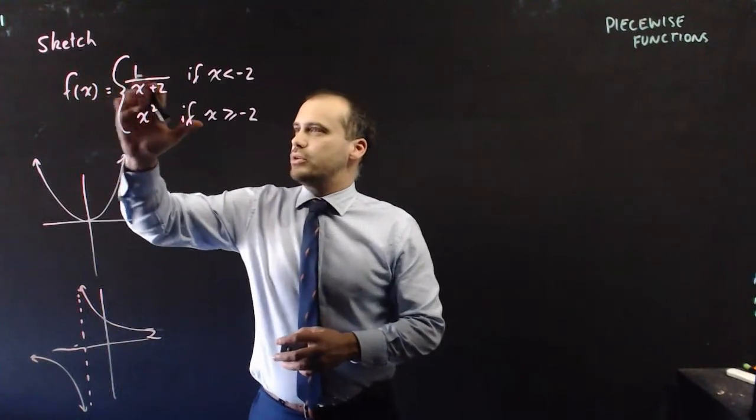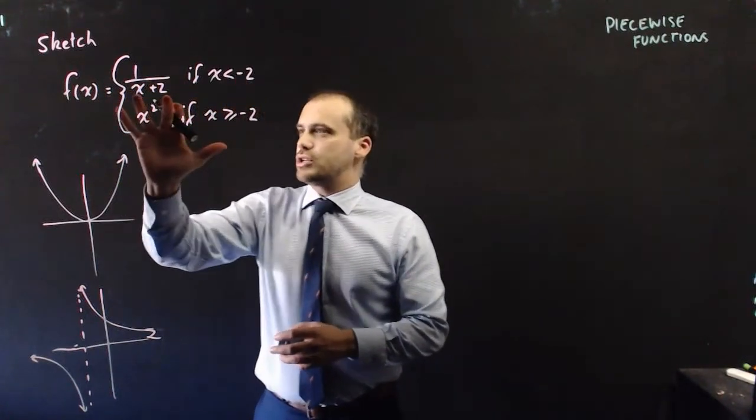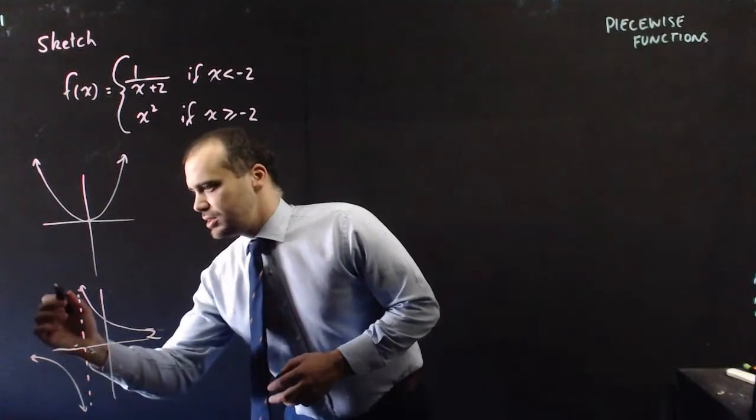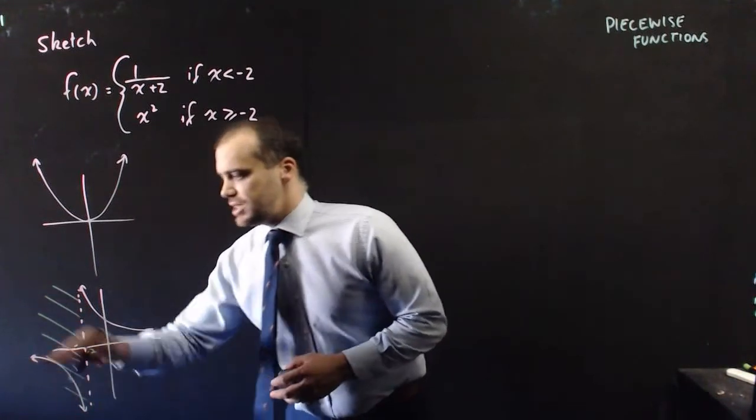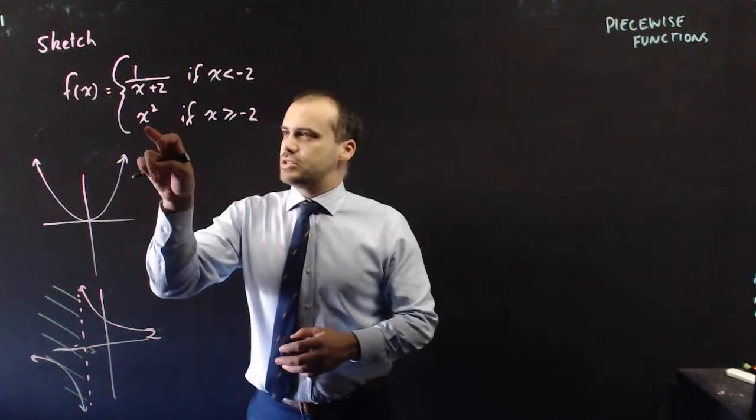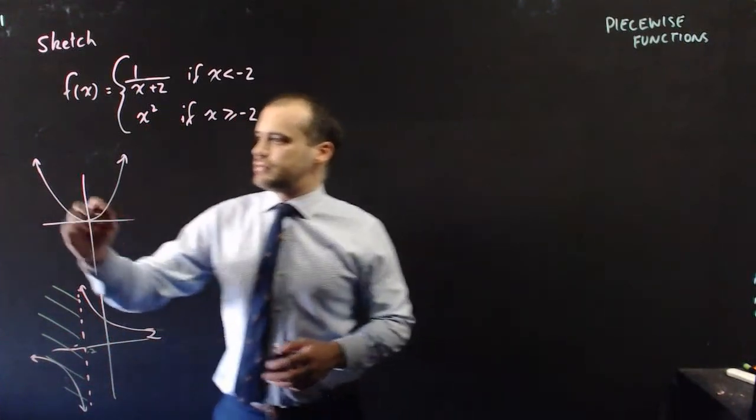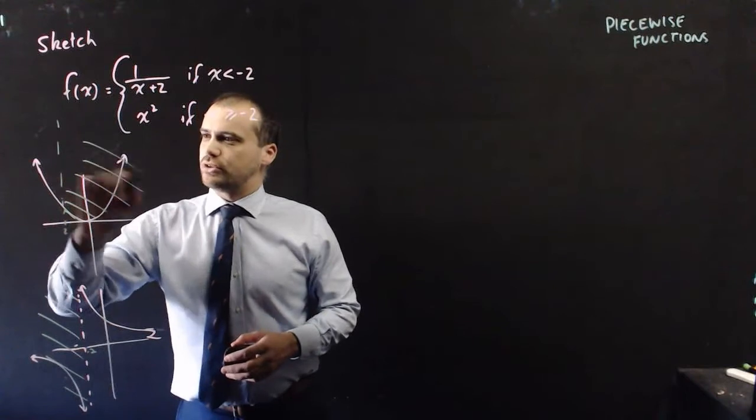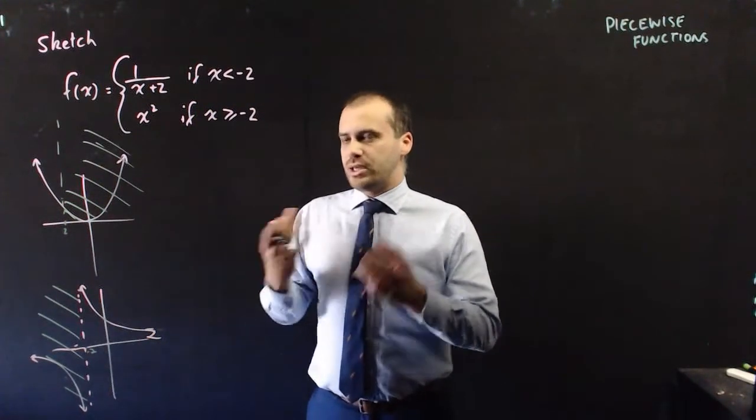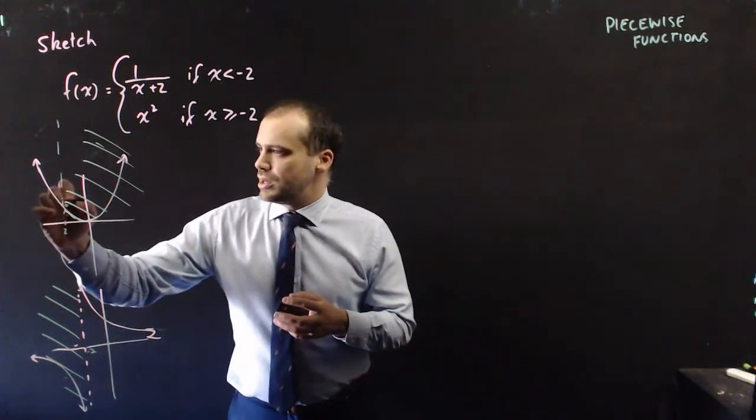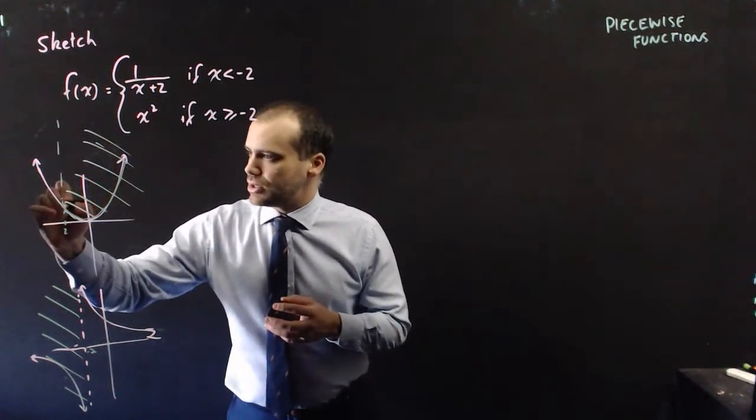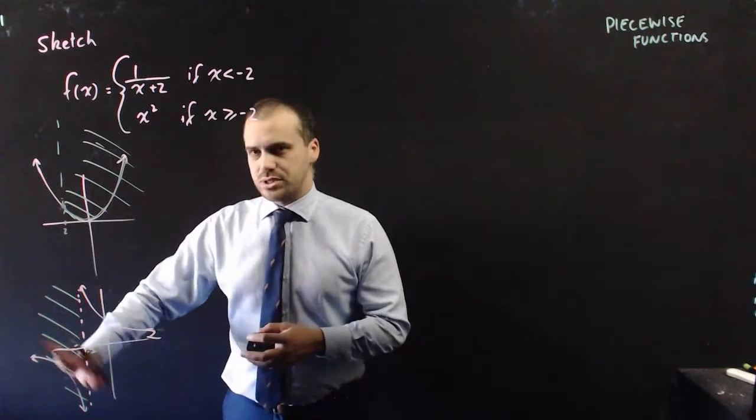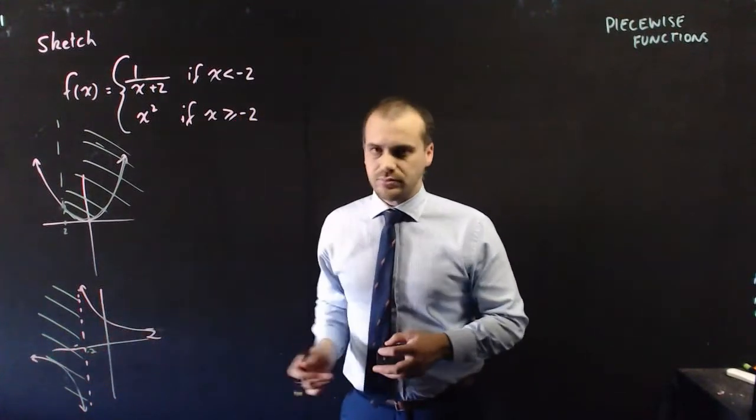Now, it says f of x equals 1 on x plus 2 if x is less than negative 2. So use this function if x is less than negative 2. So this is negative 2 right there, so it says I need to use that part of my sketch when I'm there. And it says use x squared if x is less than or equal to negative 2. There's negative 2 there, and I'm going to use that portion of my sketch here. Now, it's going to be important that I show my key points here. We might find a point right there.